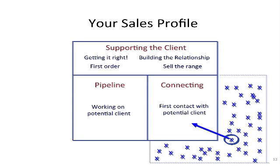Looking at that diagram, you'll see the three sections — roughly a third, a third, a third. What we need to look at is how much time are you spending connecting with new clients? How much time are you spending in the pipeline building the relationship to get the first order? And how much time do you spend supporting the client — in terms of getting it right, but also building the relationship and getting more business?